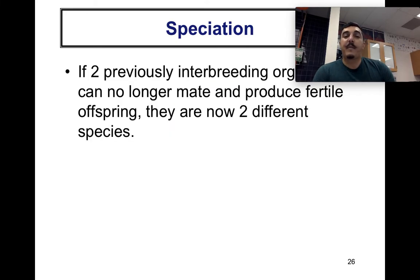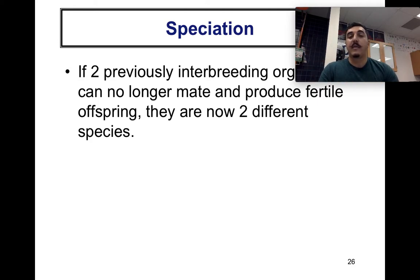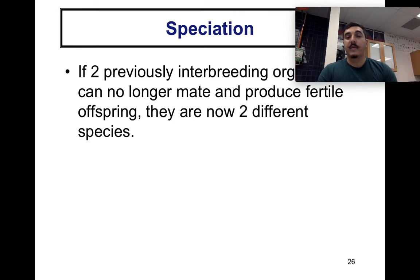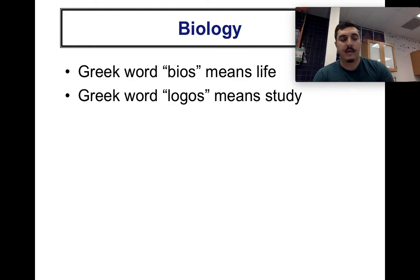Speciation occurs when two previously interbreeding organisms can no longer mate and reproduce with each other, causing them to become two distinct species. That wraps up the first part. Feel free to take a short break before we move into levels of classification.